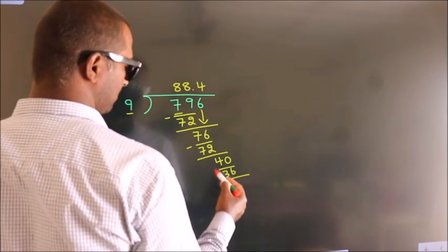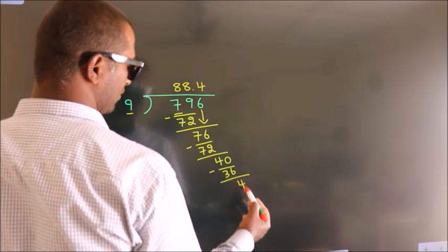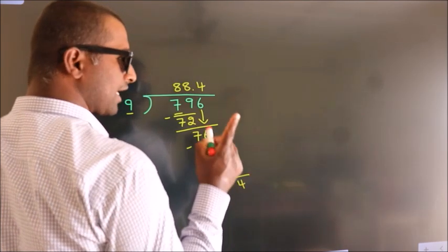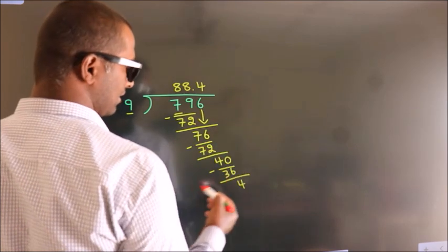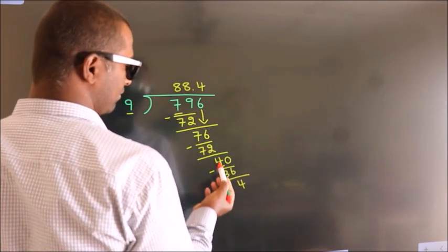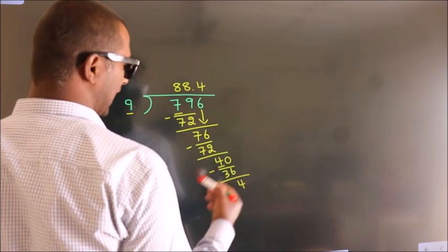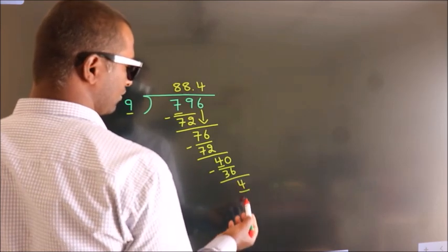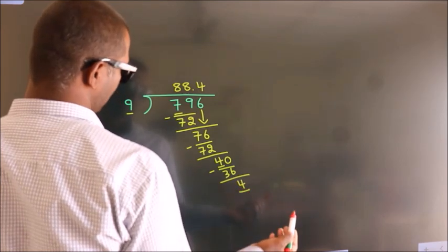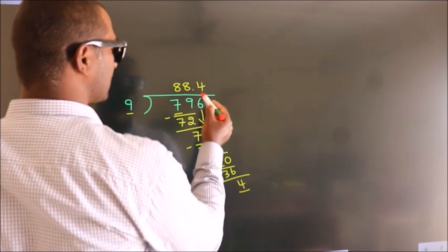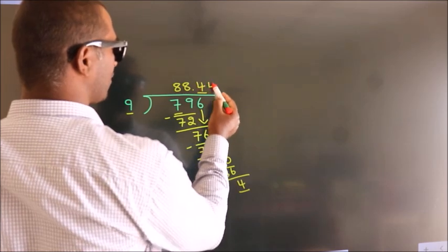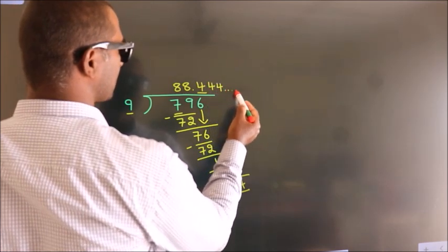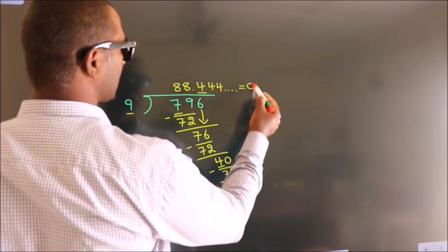Now, we subtract and we get 4. Now, you observe, we had 4 here, and we got 4 again. That means this number keeps on repeating. So this is our quotient.